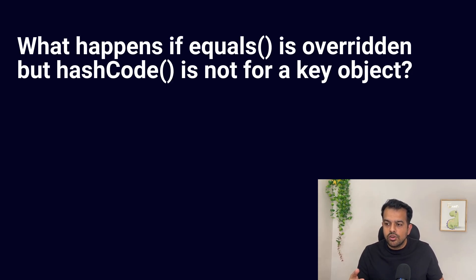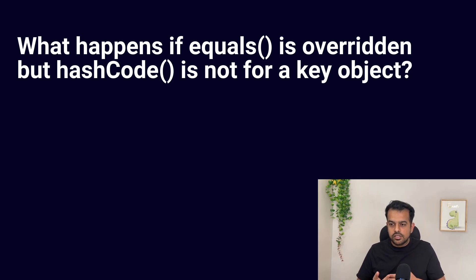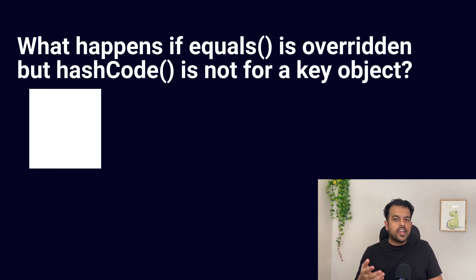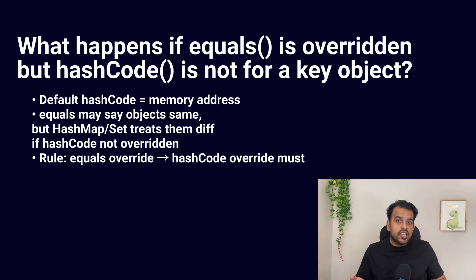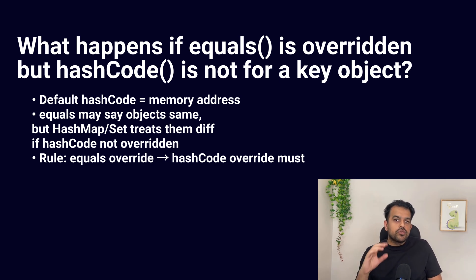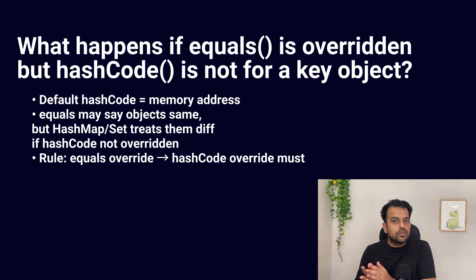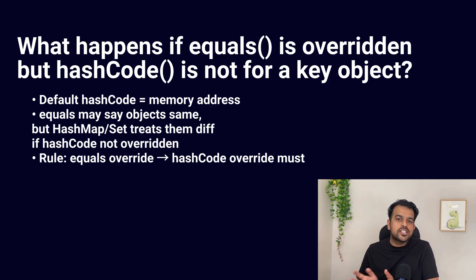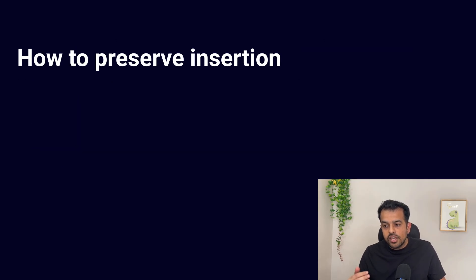The next question: what happens when you override equals() but not hashCode() for an object used as a key? Hash-based collections first use hashCode() to locate the bucket, then use equals() to check if keys match. If hashCode() is not overridden, Java uses the default Object class hash based on memory address. Two objects that are logically equal by equals() might end up in different buckets, so HashMap or HashSet cannot detect them as the same key. This breaks uniqueness. The clear rule: if equals() is overridden for a key, hashCode() must also be overridden to ensure consistent behavior.